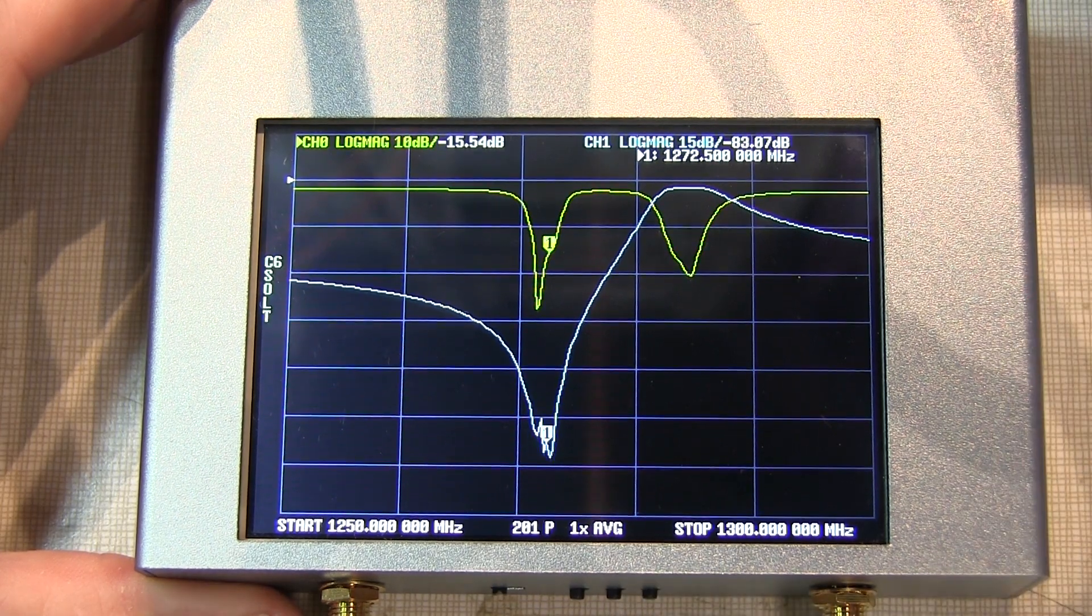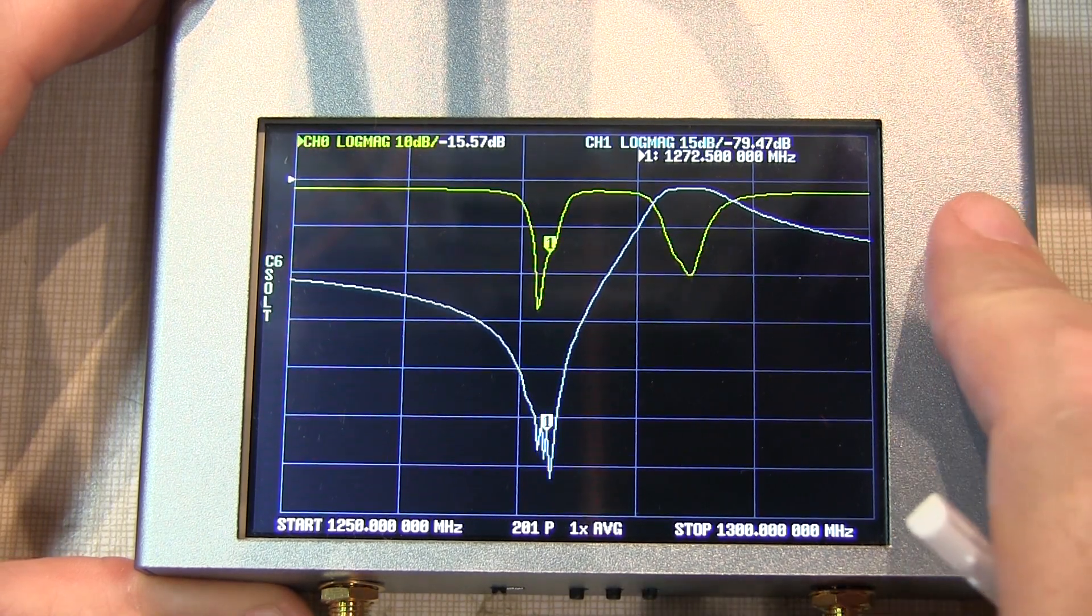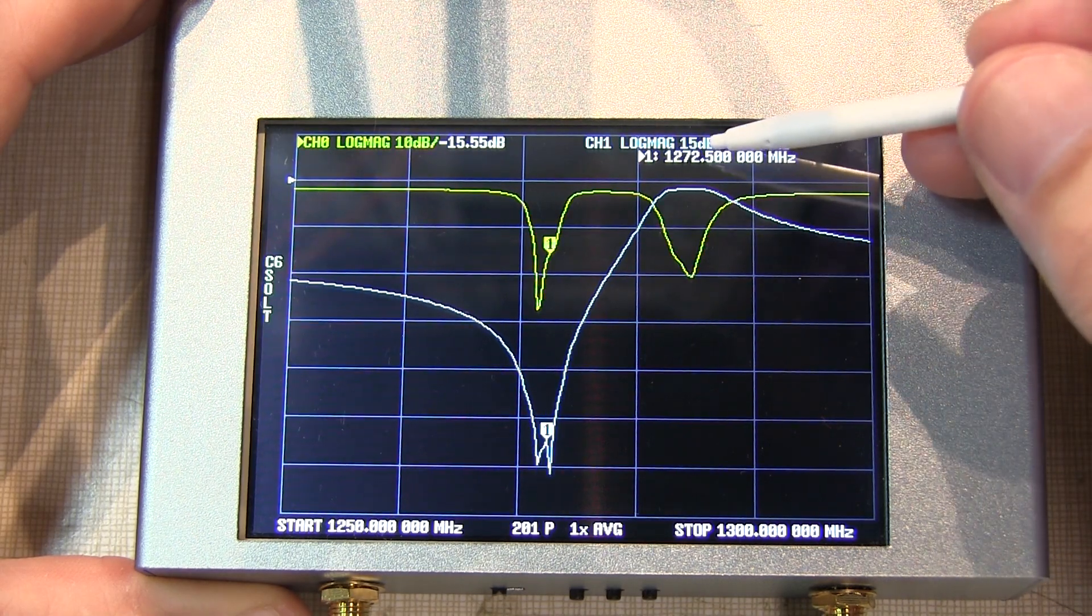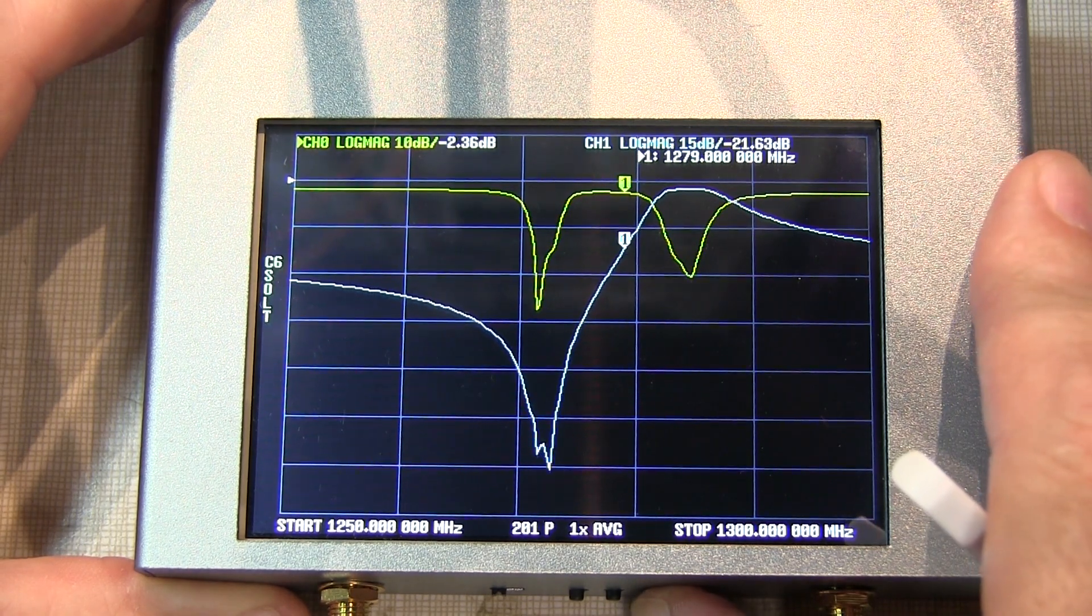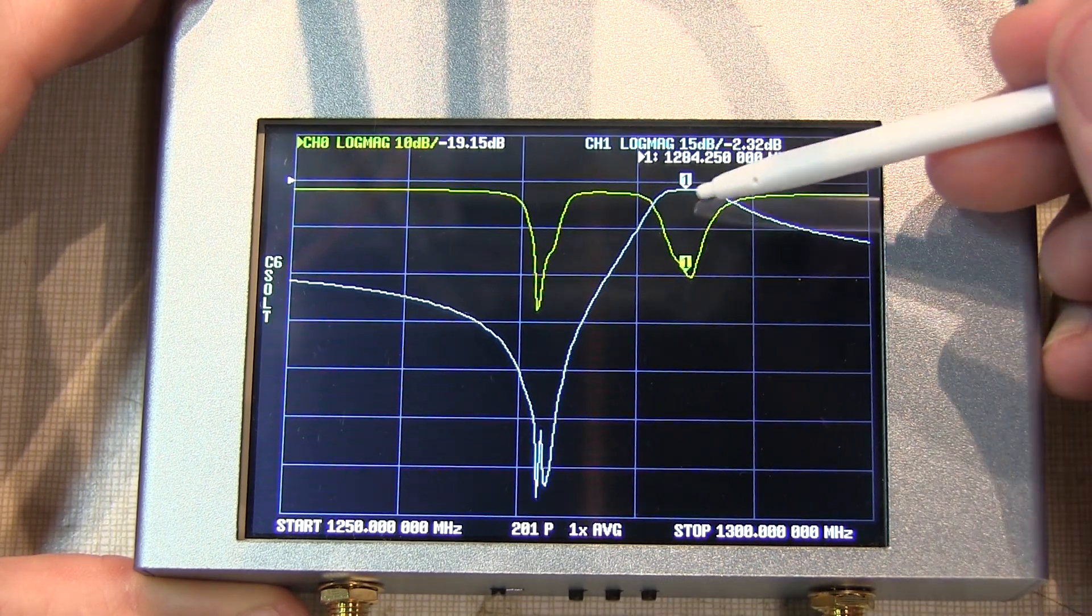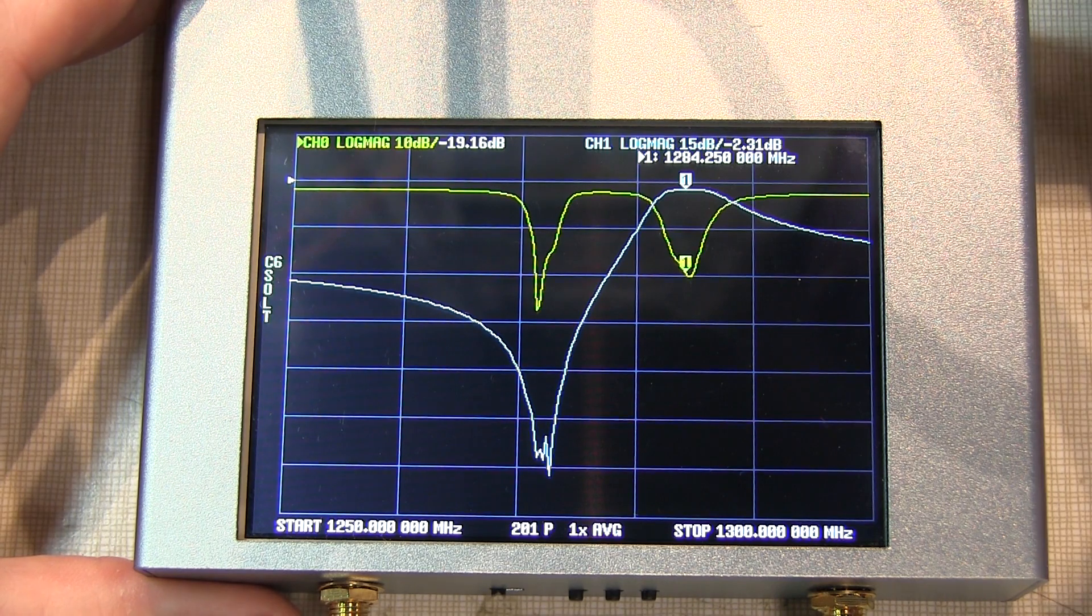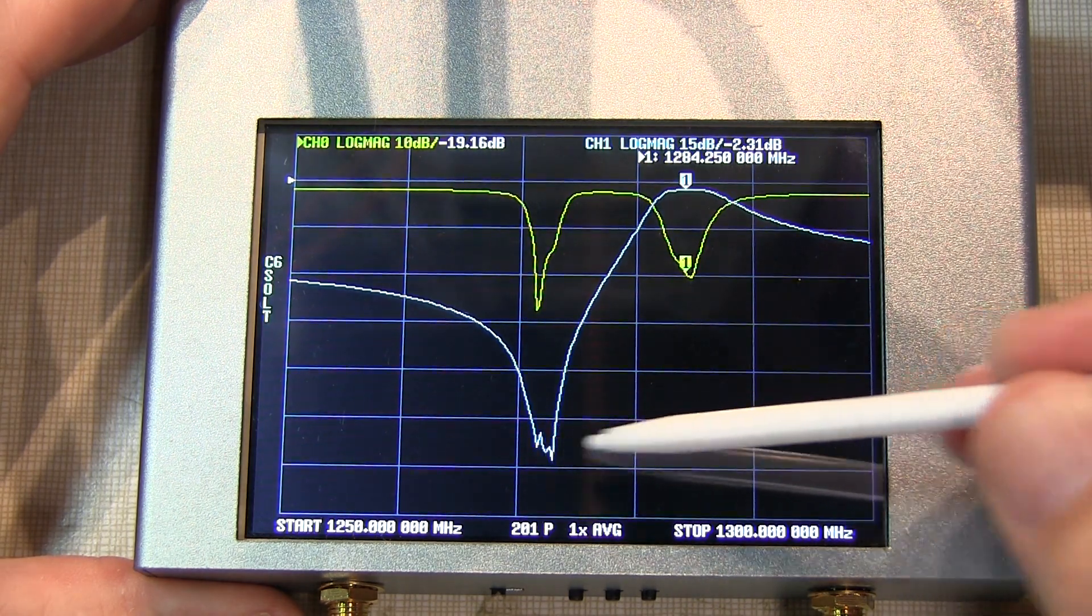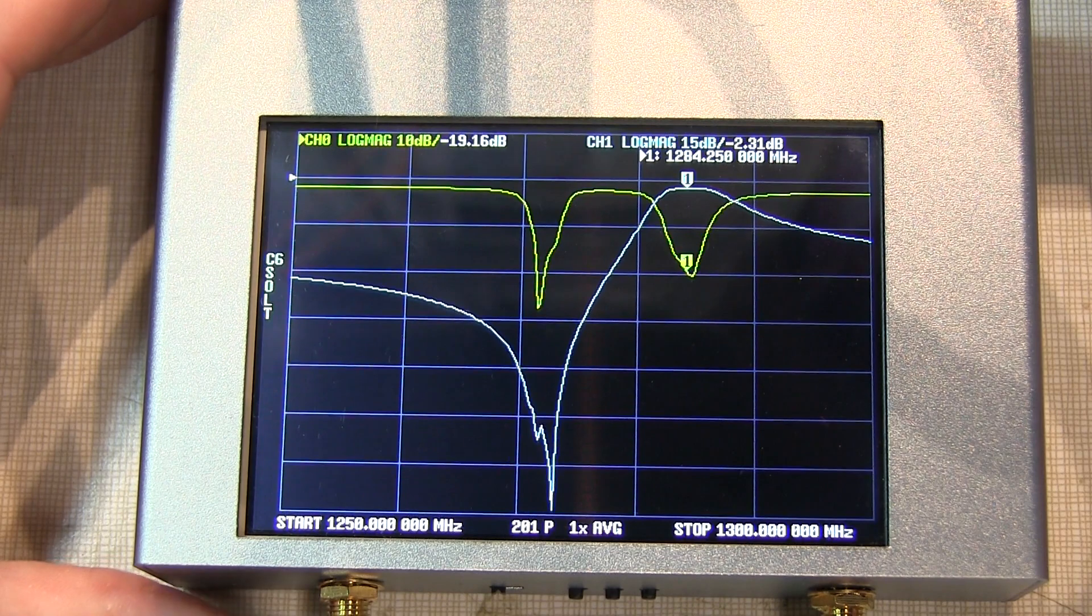In most cases, 1200 megahertz repeaters have a 12 megahertz offset. So I'd expect the high side to be 12 megahertz higher, or 1284.5. Let's move the marker up there. Yeah, that indeed looks like it's about the center of the high side. Now let's look at the low side of the duplexer.